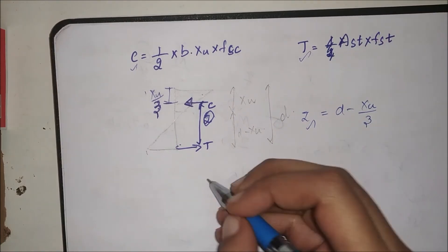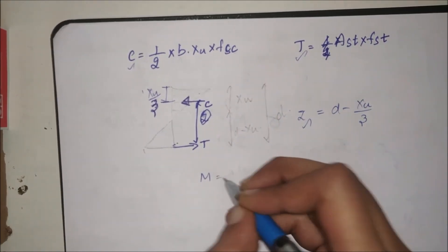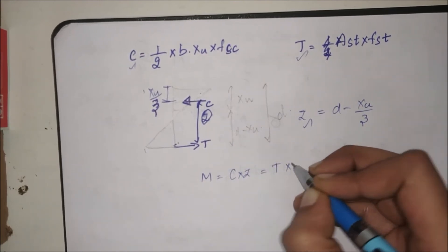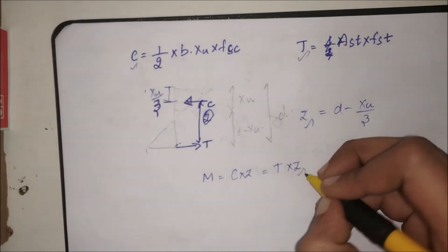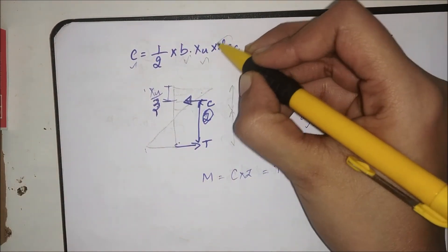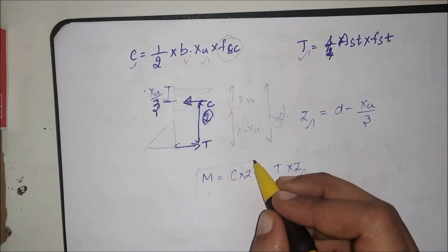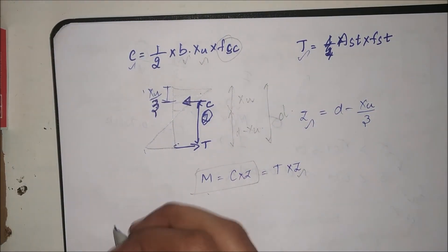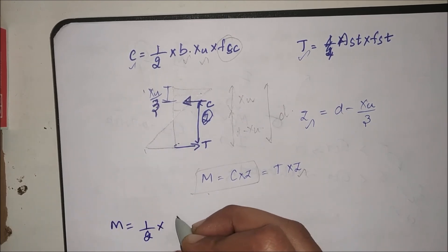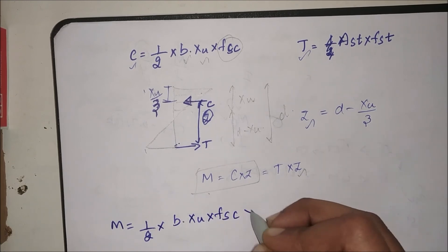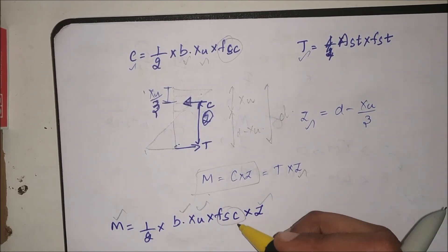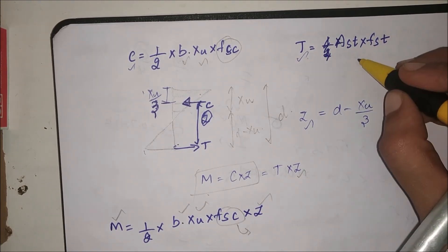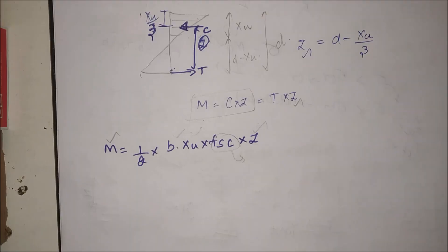Now I know C, T, and Z. The applied moment M equals C times Z, which also equals T times Z. From the equation M equals half times B times XU times FSC times Z, I know M, B, XU, and Z, so I can solve for FSC. Similarly, equating T times Z to M gives FST. I'll see you in the next video for the next type of problem.